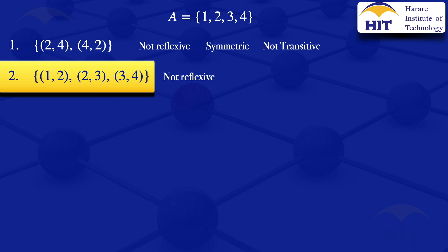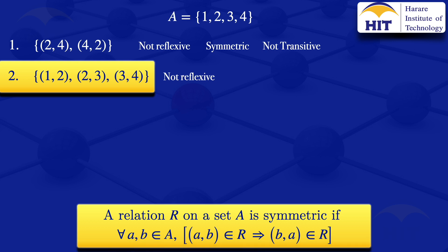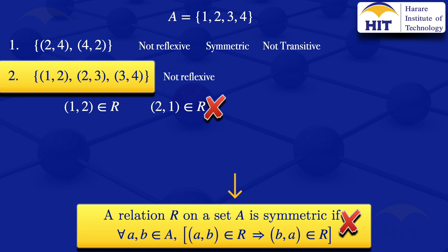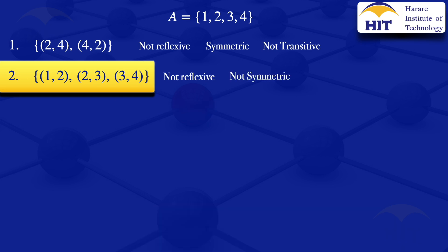Checking if the second relation is symmetric: a relation is symmetric if for all a, b in set A, whenever (a,b) is in R, then (b,a) is in R. Looking at the ordered pair (1,2), we check if (2,1) is in the relation R. We do not have (2,1) in this relation, so the condition is violated and the relation is not symmetric.